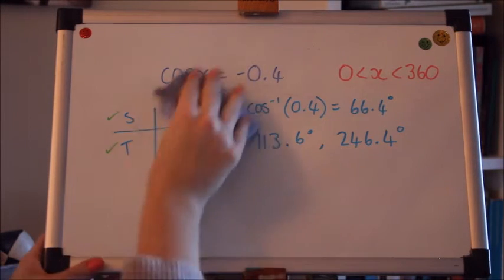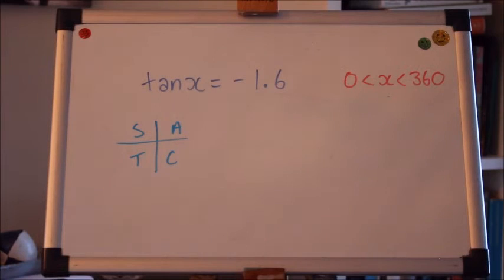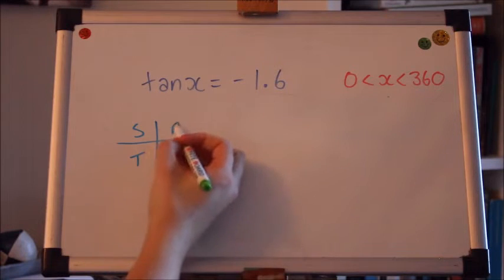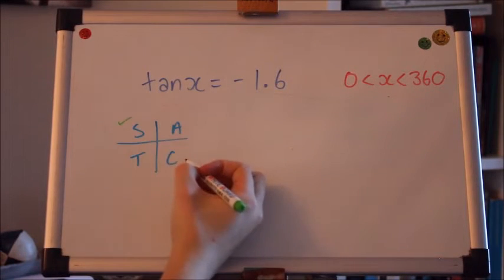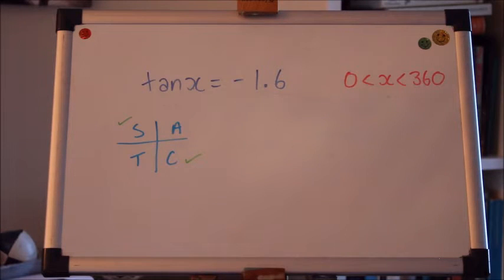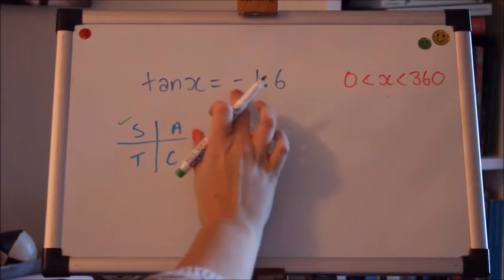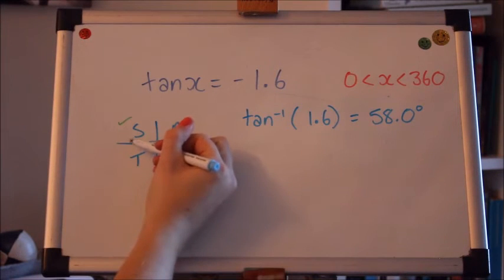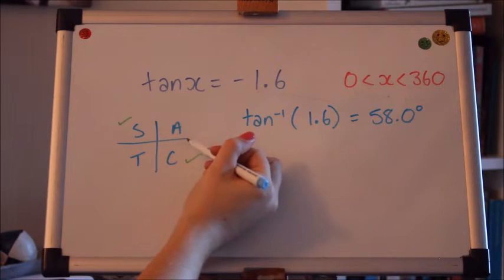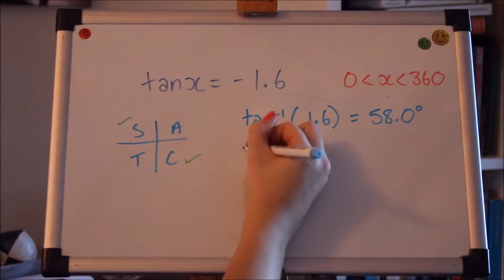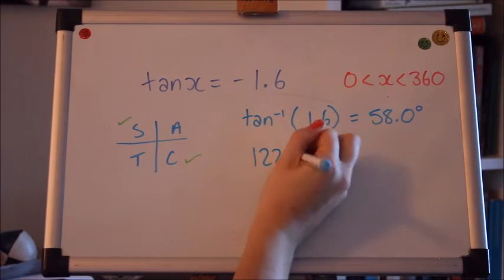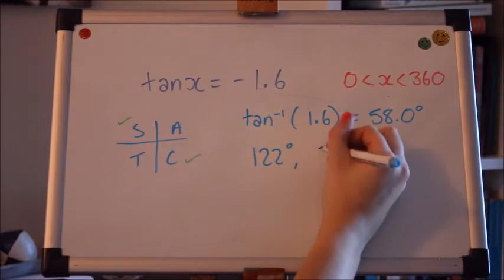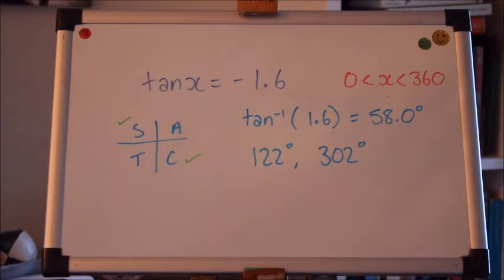Good. Let's do a tan example. Again, this is negative. So I want where tan is negative. I want to get the acute angle by making that positive. And I'm going to do 180 minus and 360 minus. Well done if you're starting to get those. I am going quite fast here. So please make sure you do plenty of practice.